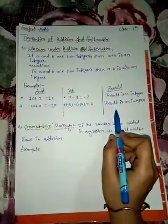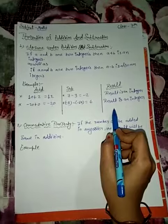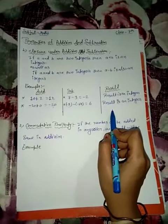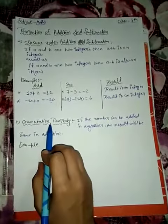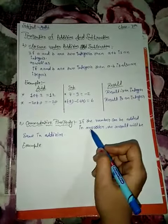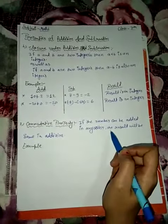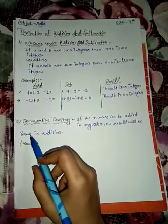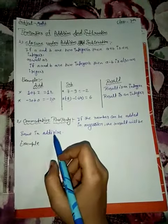Now we discuss the commutative property. If numbers can be added in any order, the result will be the same in addition.